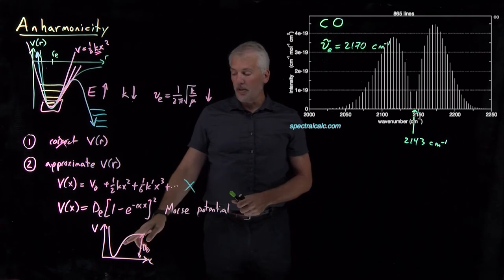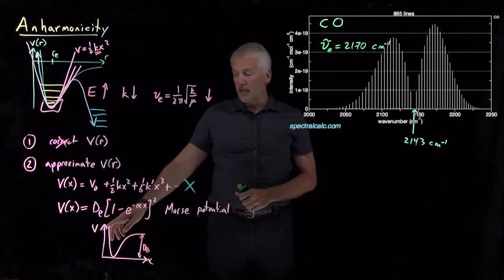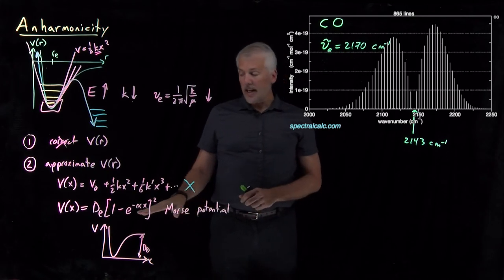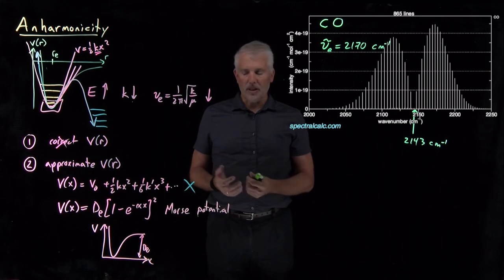That function looks an awful lot like the correct function, and you can do a pretty good job of modeling the covalent bond in an anharmonic oscillator with this Morse potential. You can actually plug it into Schrödinger's equation, solve Schrödinger's equation, come up with wave functions and energies, and they are reasonable approximations.